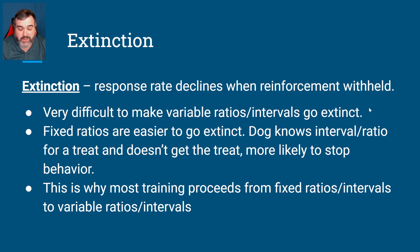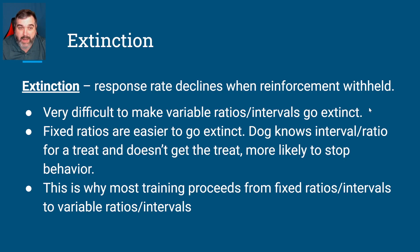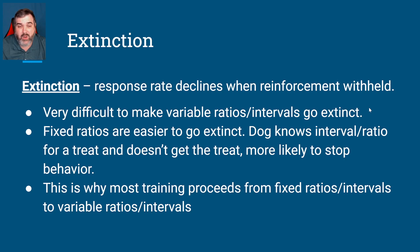A lot of people get very superstitious around sports — we won the game and I was wearing this pair of underwear or these socks or my shoes tied this way, so I have to repeat that for the reward to happen again. That's operant conditioning at work. This is why a lot of training proceeds from fixed ratios to variable schedules, because fixed ratios can easily go extinct, but variable ones not so much.